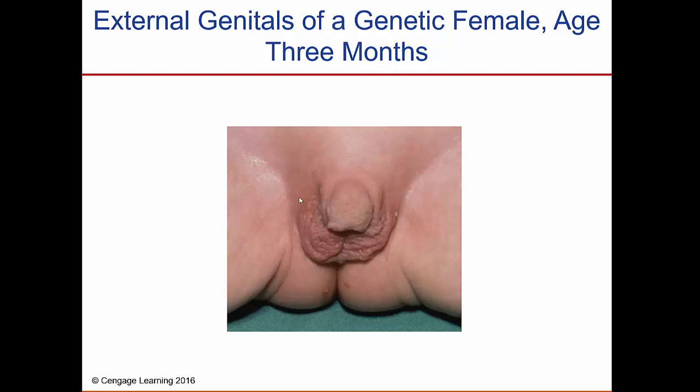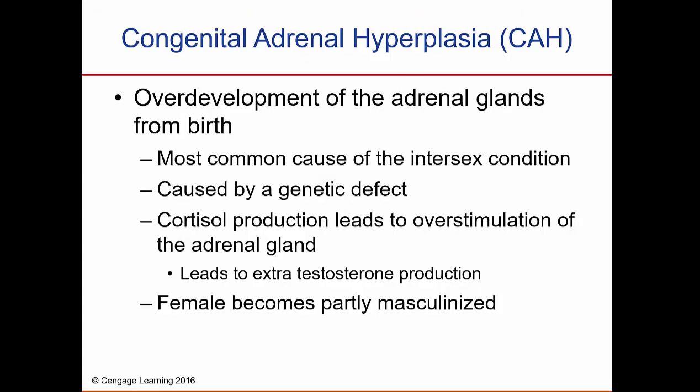There are many different things that can happen as a result of hormones in the womb or other factors during the first trimester. Intersexuality seems to be caused by abnormalities in the first trimester of pregnancy. The most common cause is congenital adrenal hyperplasia, where the adrenal glands are overdeveloped, leading to extra testosterone production, and so the female becomes partially masculinized.